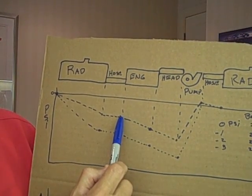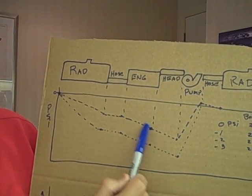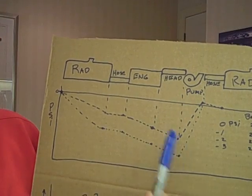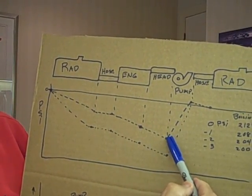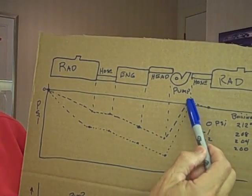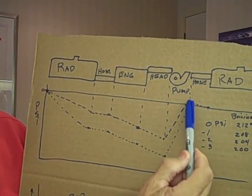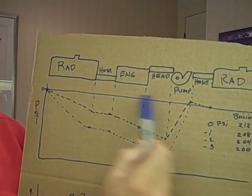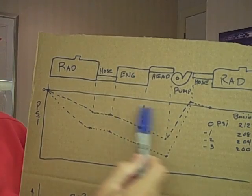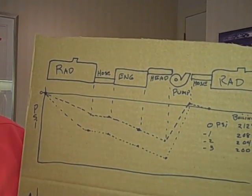There's a slight pressure drop through the lower hose, probably not much. The pressure drop through the engine and head is probably nothing we can do anything about. Then it hits the pump inlet and goes up slightly above atmospheric, just enough to overcome the pressure drop of the upper hose and then back into the top tank of the radiator.